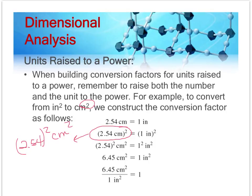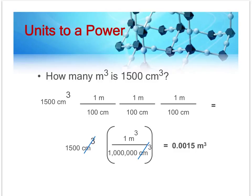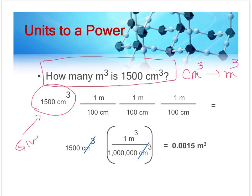Alright, so for example, this problem is asking you basically to convert from cubic centimeters to cubic meters. So, as always, we start with the given information, which is 1,500 cubic centimeters. What does cubic centimeter mean? That means we've multiplied centimeter by itself three times. So we have three centimeters in there. So in order to cancel out centimeters and get meters, we have got to do it three times. So, in order to get rid of this centimeter cubed, we have to divide by centimeter cubed.